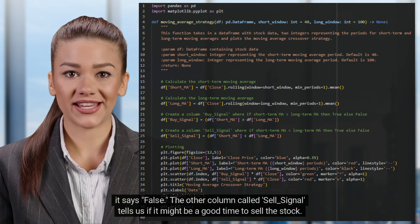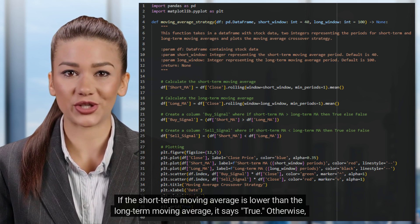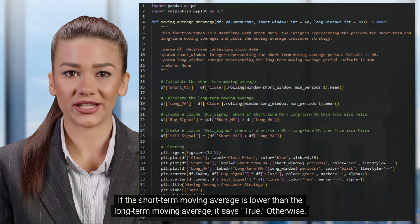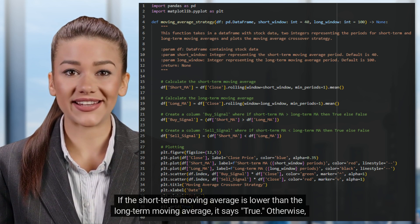The other column called sell_signal tells us if it might be a good time to sell the stock. If the short-term moving average is lower than the long-term moving average, it says true. Otherwise, it says false.